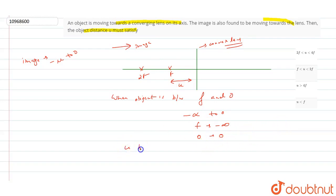So we write that u must be between f and zero. Since the object is between f and O, then u is less than f. So this is our solution: u is less than f. Therefore, option 4 is our correct answer. This is our solution.